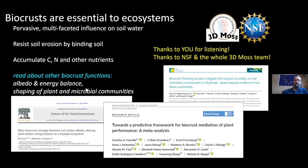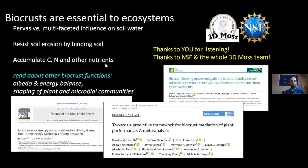My main point today is that bio crusts are essential to ecosystems, particularly ones limited by water or temperature. They have a pervasive, multifaceted influence on soil water. They resist soil erosion by binding soil particles together. They accumulate carbon, nitrogen, and other nutrients. I had to leave a lot out for time, but if you want to learn about other bio crust functions — like how they affect albedo and energy balance, or how they influence the development of the plant or microbial community — here are a couple more papers you may want to check out.